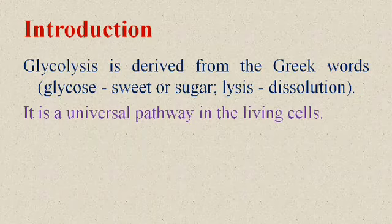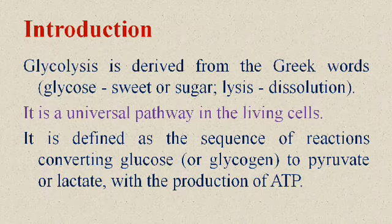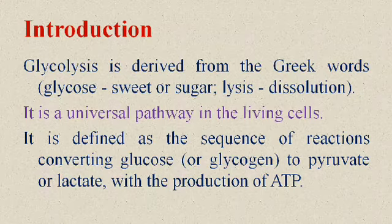Glycolysis is a universal pathway in living cells. Glycolysis can be defined as the sequence of reactions involved in the conversion of glucose or glycogen to pyruvate or lactate with the production of ATP. If glycolysis occurs in the presence of oxygen, it is called aerobic glycolysis, whose end product will be pyruvate. Under anaerobic glycolysis, its end product will be lactate.